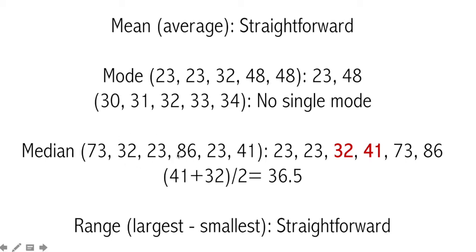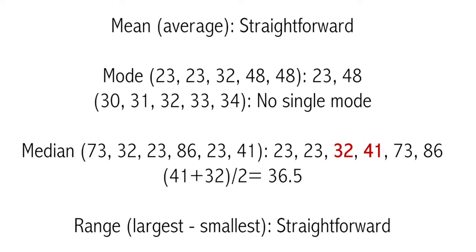For the median, sometimes you will have an even number of elements. Again, list them in ascending order and cancel from the left and right, but this time wait until you have just 2 numbers remaining. Then find the average of those 2 numbers — that is your median. We cancelled 23, 86, then the next 23 and 73, leaving 32 and 41; their average is 36.5. How you calculate the median changes based on whether you have an odd or even number of elements.